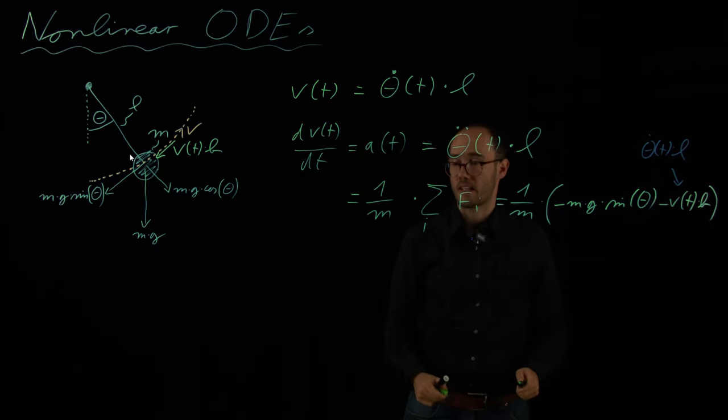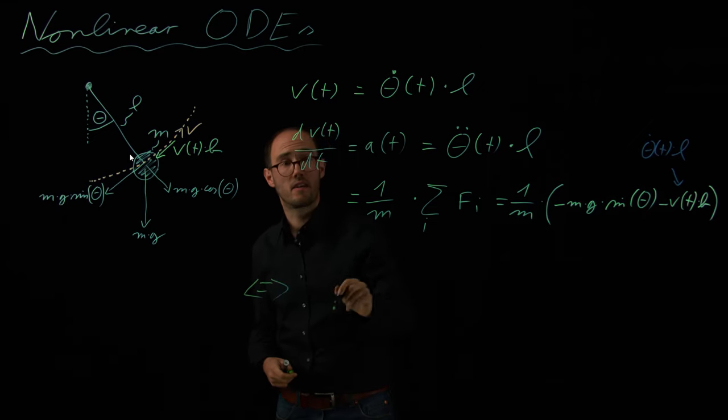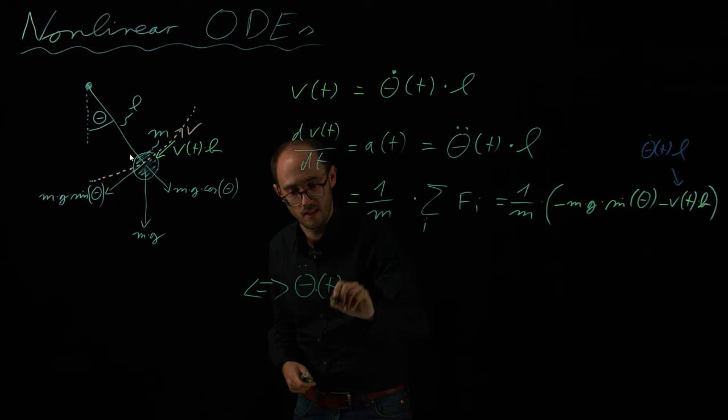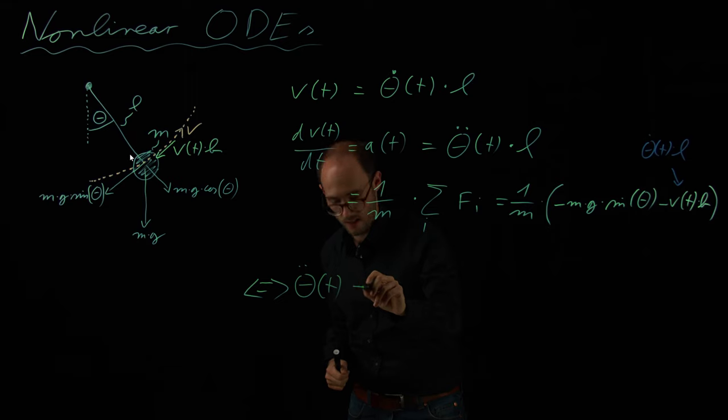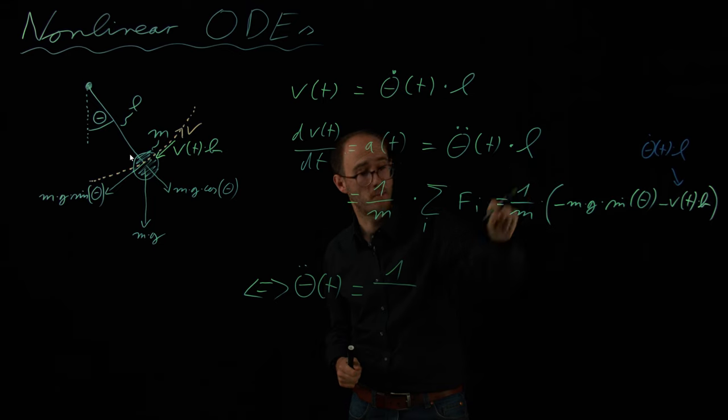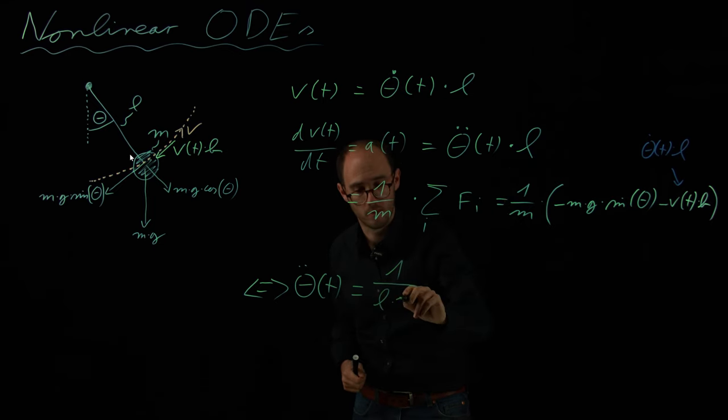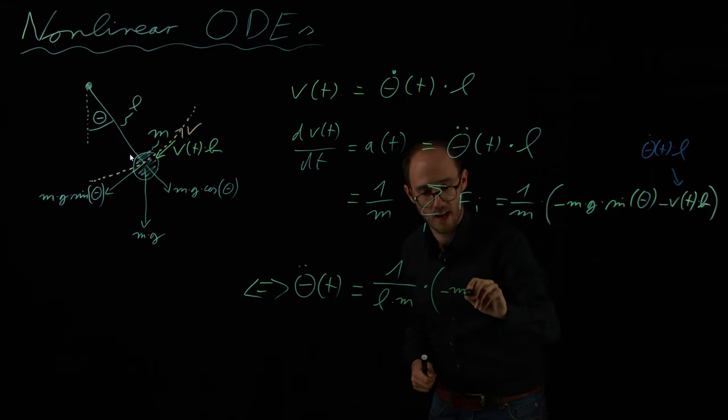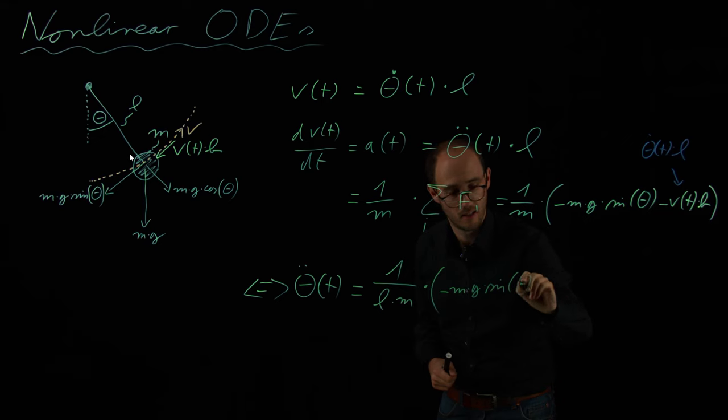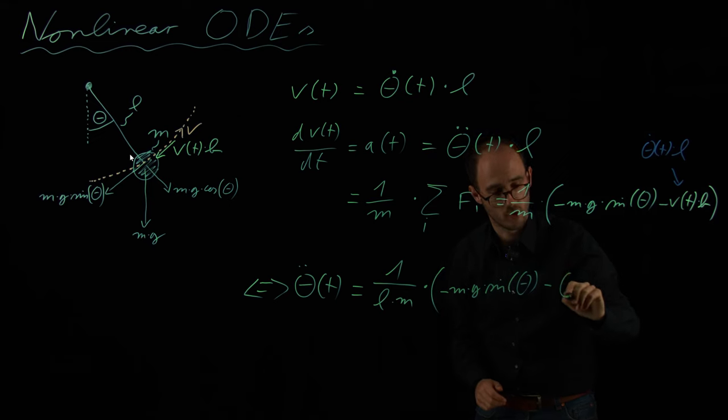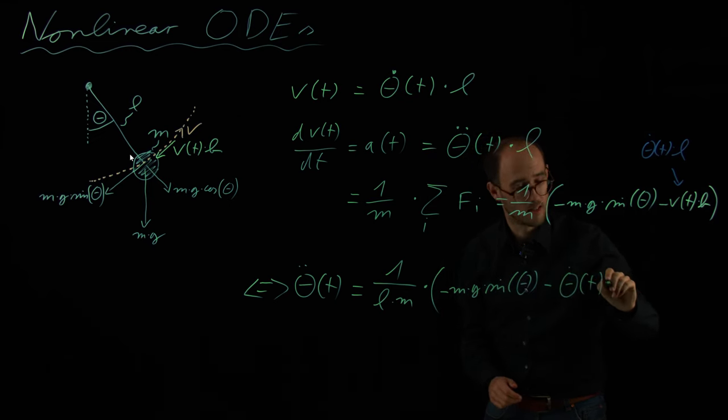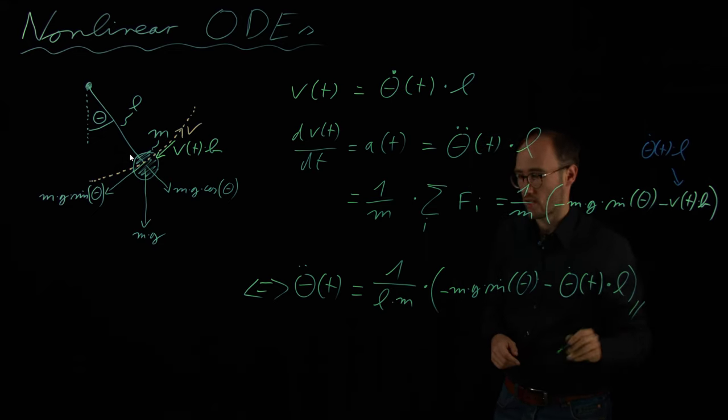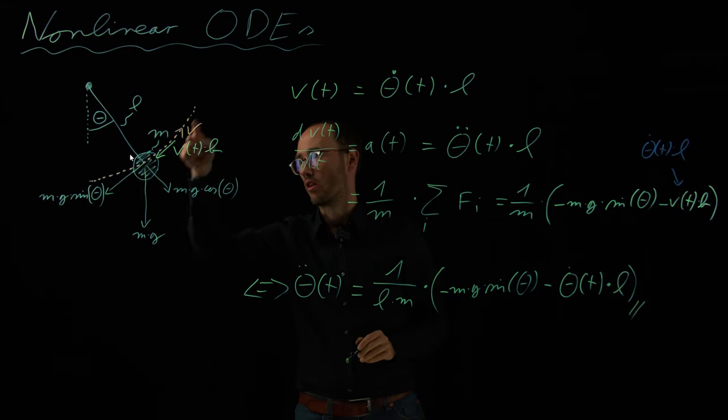And so, we can basically bring this together and find out that the derivative of the speed is theta double dot. And on the right hand side we get 1 over, so this L I basically bring to the other side, and here this m I put also in front. So 1 over Lm times this part minus m times g times sine of theta minus this part, which is theta dot of t times L times b. So this would be basically my acceleration equation for the angular acceleration along this trajectory.